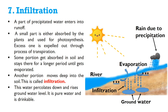The last process in the water cycle is infiltration. A part of precipitated water enters into runoff; a small part is absorbed by plants and used for photosynthesis, with excess expelled through transpiration. Some portion gets absorbed in the soil and stays there until it evaporates. Another portion moves deep into the soil — this is called infiltration. This water percolates down and raises the groundwater level; it is pure and drinkable.